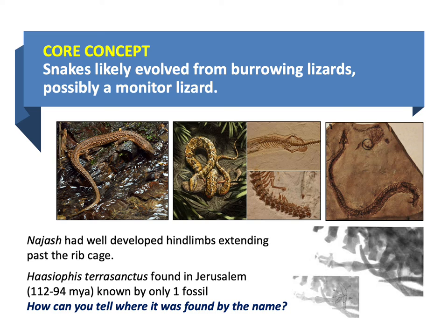We like to identify monitor lizards in particular as being close to snake ancestry, because monitor lizards exhibit a lot of snake-like qualities — including a forked tongue, just like snakes. Modern monitor lizards stick their tongue out just like snakes do; other lizards don't. Probably something like Najash — a long, thin monitor-lizard-like animal.